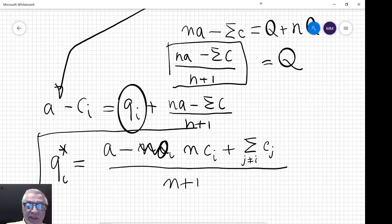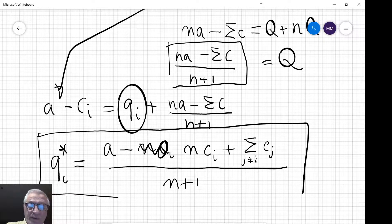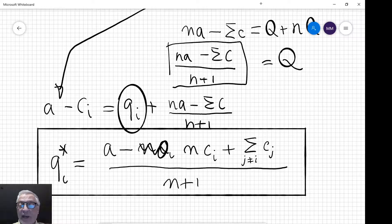So this is the solution of our Cournot equilibrium with a linear demand curve and marginal costs of the firms that are potentially different. And in the next clip we are going to put this to work to solve some of the problems in tutorial 4.